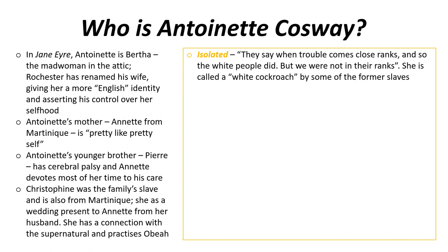Antoinette at the start of the novel is very isolated. There's a small family unit around her, but even within that, because Annette is so concerned with looking after Pierre, Antoinette remains very isolated. The whole family themselves are also isolated from the rest of the community. The very first line of the novel is: 'They say when trouble comes close ranks, and so the white people did, but we were not in their ranks.' She's also called a white cockroach by some of the former slaves. That pronoun 'they' is so simple but it echoes throughout the entire novel as a motif, suggesting different racial groups, different gender groups, different hierarchies in terms of social class.